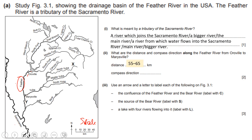Your answer will be between 55 to 65 kilometers. For compass direction, remember your cardinal points — Never East South West (Never Ever Smoke Weed). Taking your reading from Oroville, you draw your cardinal point and find that Marysville is south of Oroville. So the answer is south.